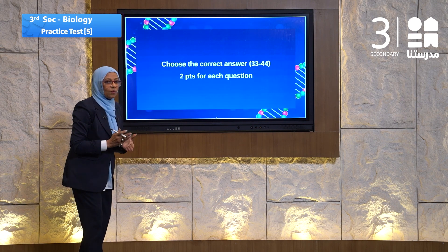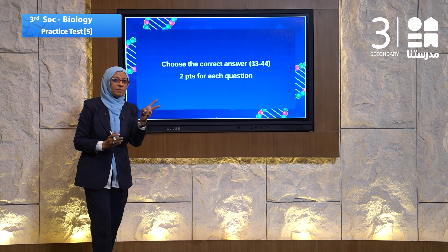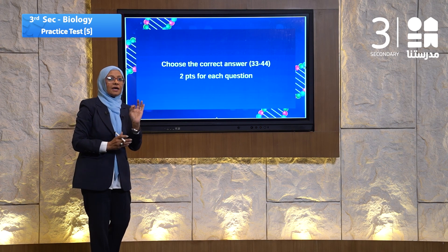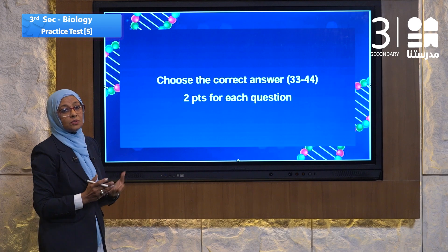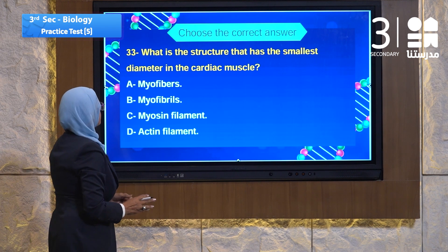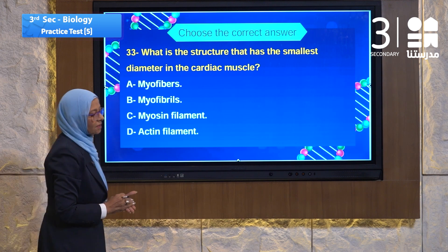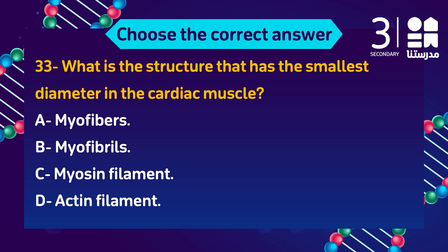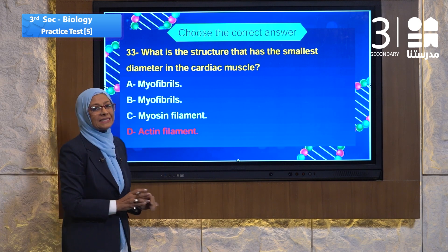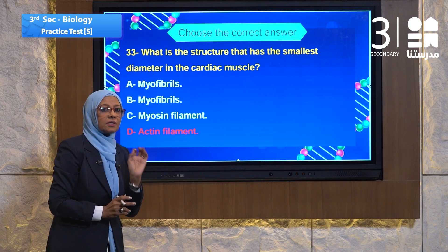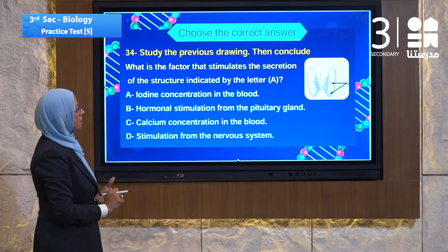Moving to question 33, a two-mark question we must read carefully and not lose marks. Question 33 is about the cardiac muscles. What is the structure with the smallest diameter in cardiac muscles? The hierarchy goes: myofibers, myofibrils, myosin filaments, or actin filaments. The smallest one is actin filaments — two marks, be careful.